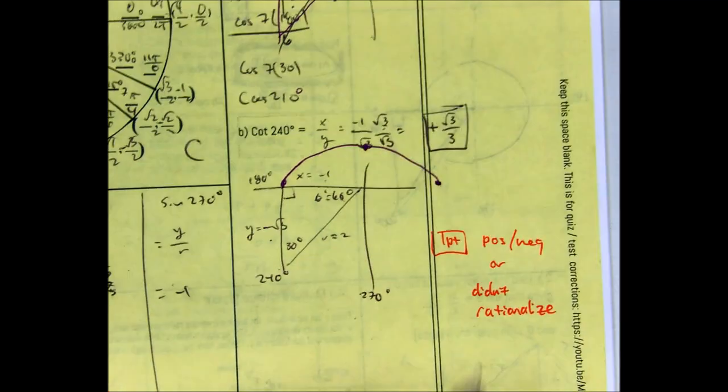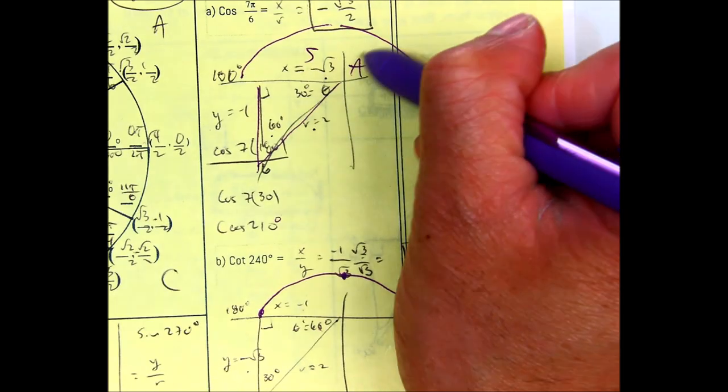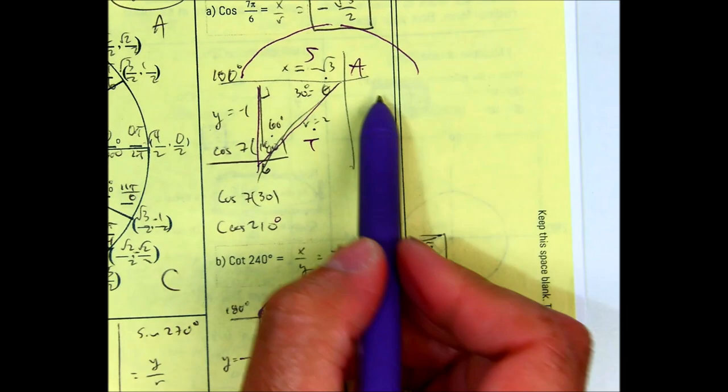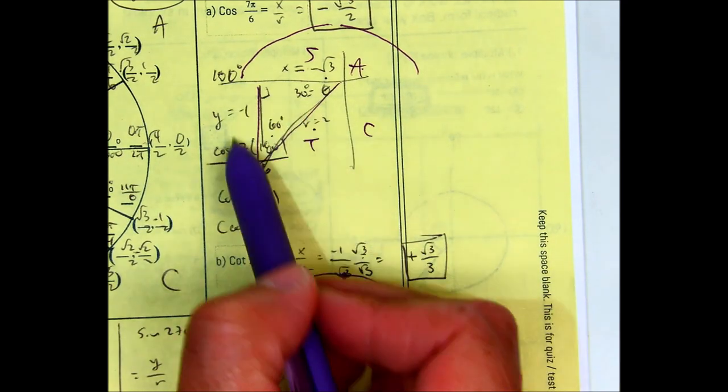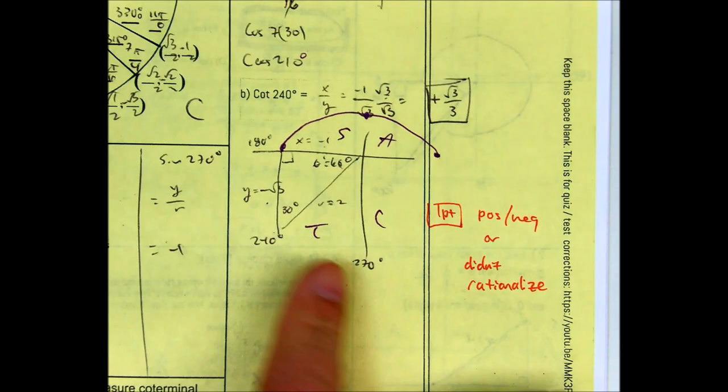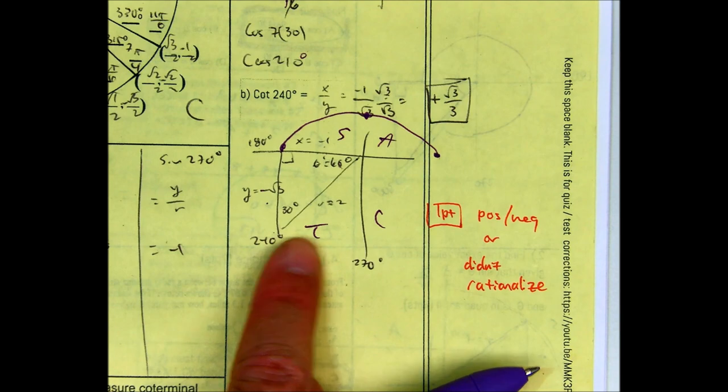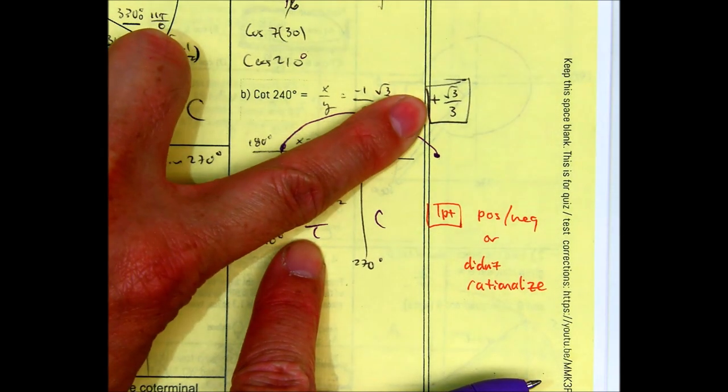Remember, you can always use all students take calculus to double check. Over here, tangent and cotangent are positive. Everything else is negative. All students take calculus. You're here in quadrant 3, so tangent and cotangent must be positive. Do you see how I'm using the acronym to check my answer?